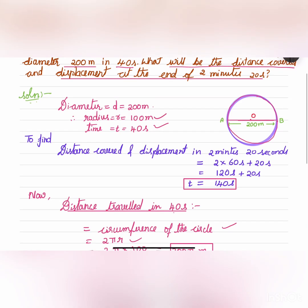Now we need to find out the distance covered and displacement in 2 minutes and 20 seconds. So we have to convert this 2 minutes 20 seconds into seconds. 2 minutes will be 2 into 60 seconds, that is 120 plus 20. So total 140 seconds.